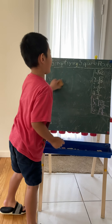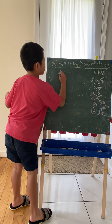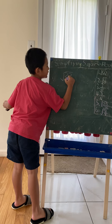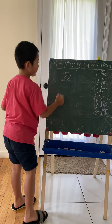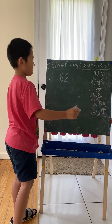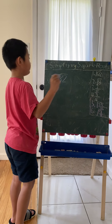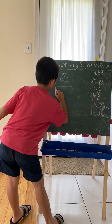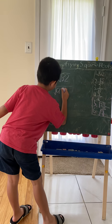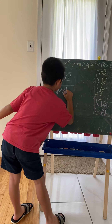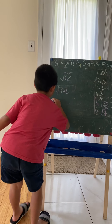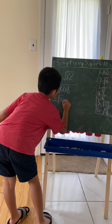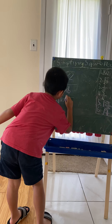But what if you end up with the square root of 32? 32 isn't a perfect square. We have a rule: the square root of A times B equals the square root of A times the square root of B.